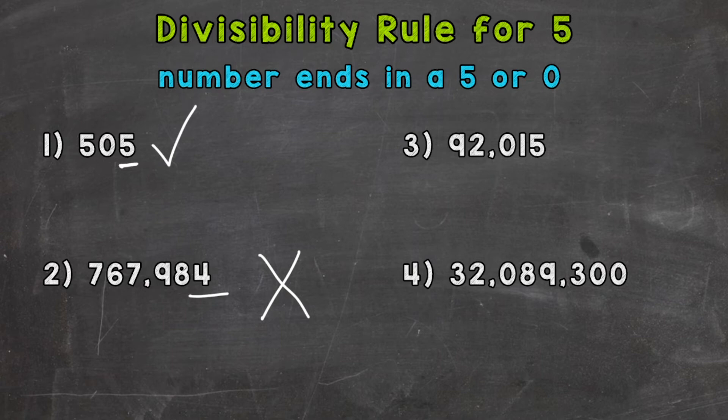Now number three, we have 92,015. That number ends in a 5, therefore divisible by 5.